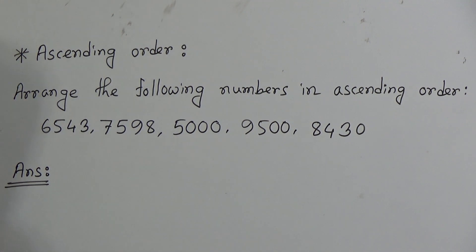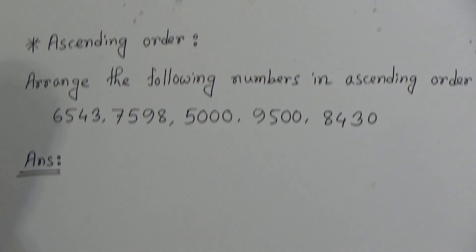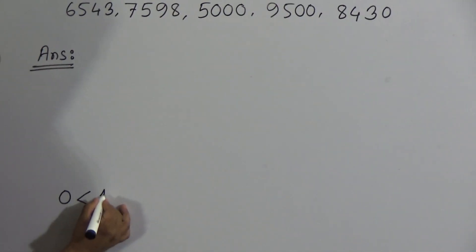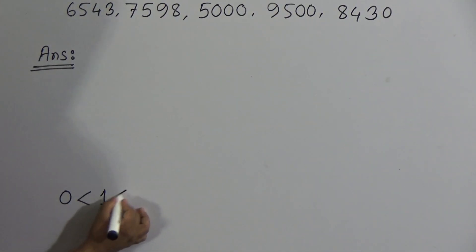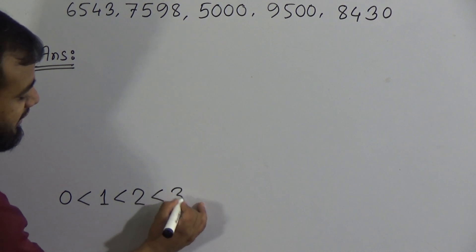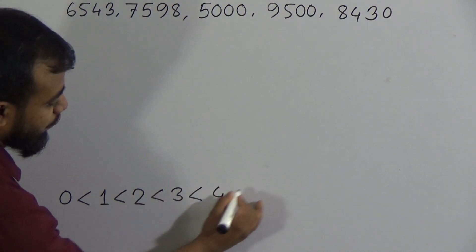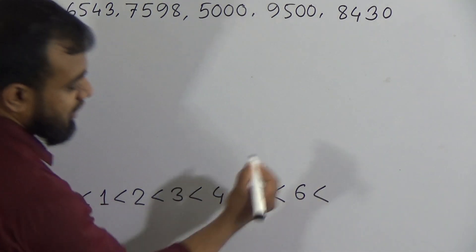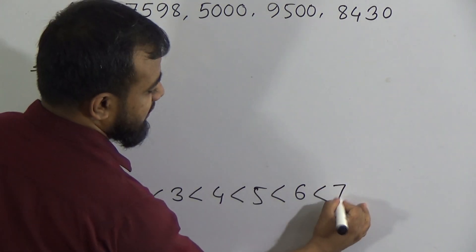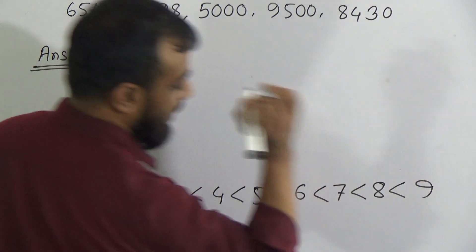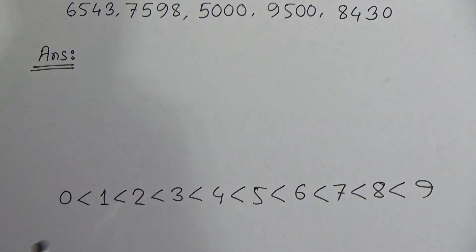Look at all the digits. 0 is the smallest digit. 0 is smaller than 1, and 1 is smaller than 2. Like this, 2 is smaller than 3, 3 is smaller than 4, 4 is smaller than 5, 5 is smaller than 6, 6 is smaller than 7, 7 is smaller than 8, and 8 is smaller than 9. I have read down all the digits.